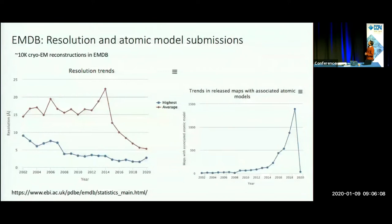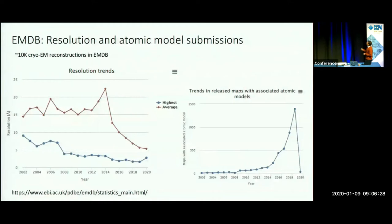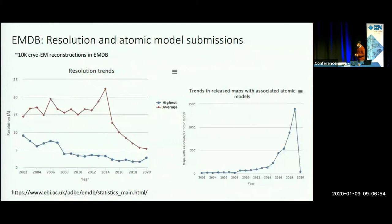Just to give an overview on the cryo-EM data available in EMDB: there are around 10,000 cryo-EM maps deposited in EMDB right now. The resolution is obviously improving, as you all know. From 2013-14 onwards there's been a resolution revolution, and the average map resolution for single particle analysis has dropped steadily. The best resolution map every year is also improving — the current best resolution is 1.54 angstrom apoferritin map.